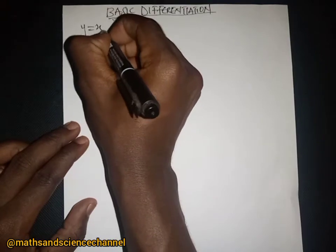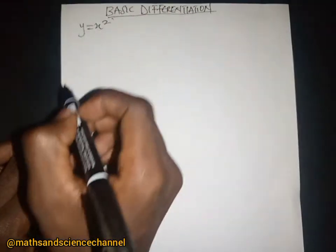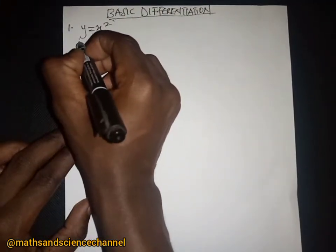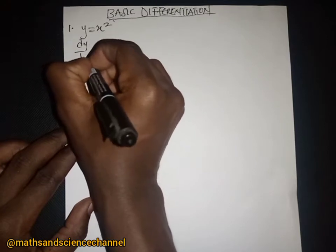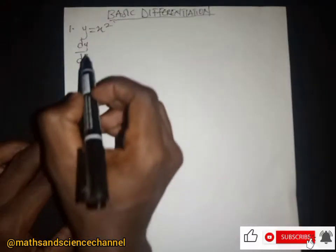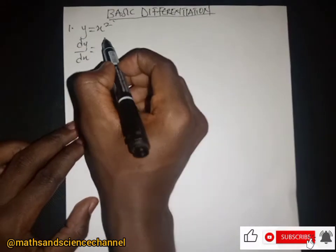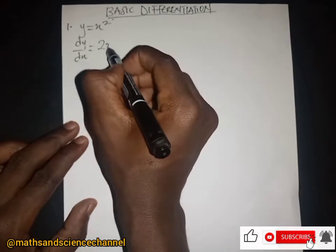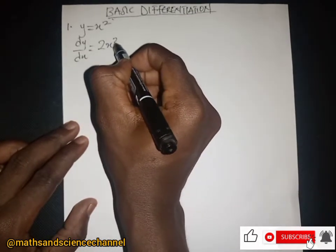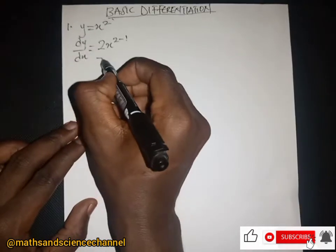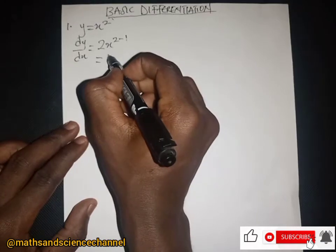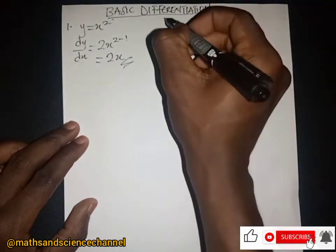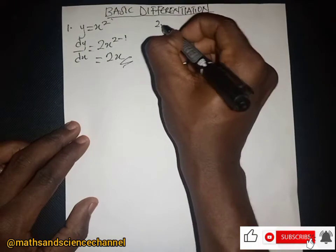Let's say we have y equal to x squared. In differentiating this, we have dy/dx equal to — we drop the exponent down and subtract one from it — and we are just going to get 2x.